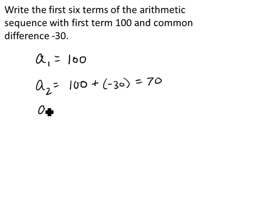And then we would just continue in that pattern. So the third term, we would start with 70, the previous term, and add the common difference. So that gives us 40.